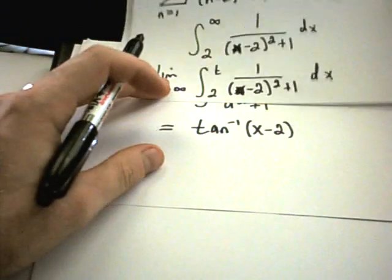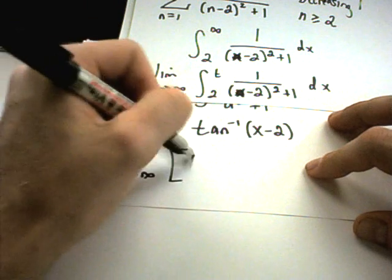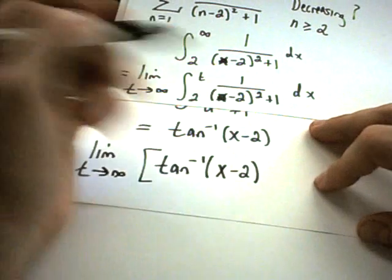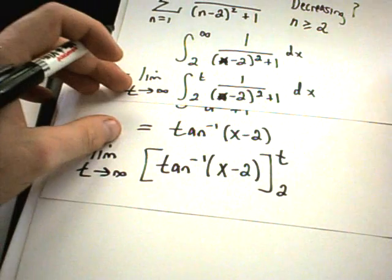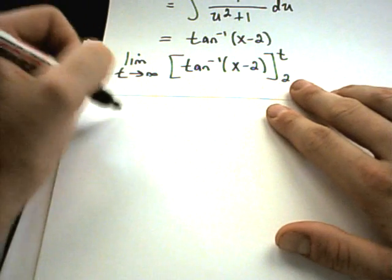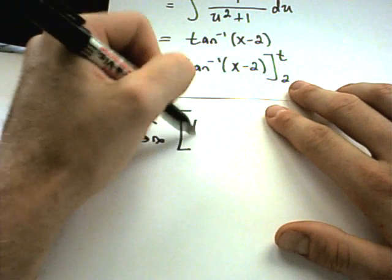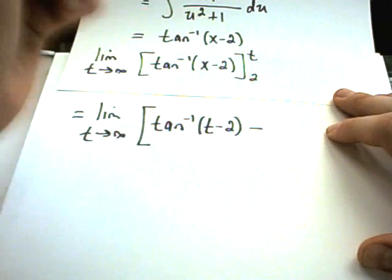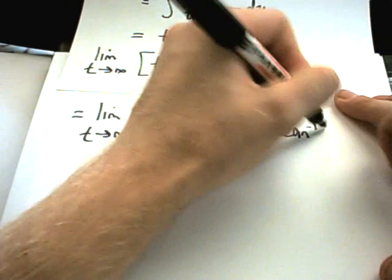So I just need to replace my limit as t goes to infinity. So the limit as t goes to infinity of arctangent of x minus 2. And I'm going to evaluate this from 2 to t. Alright, so now we need to plug in our limits of integration and see if this thing converges or diverges. So I'll get the limit as t goes to infinity. Well, if I plug in t, I'll get arctangent of t minus 2. Minus, when I plug the lower limit of 2 into the problem, I'll get arctangent of 0.